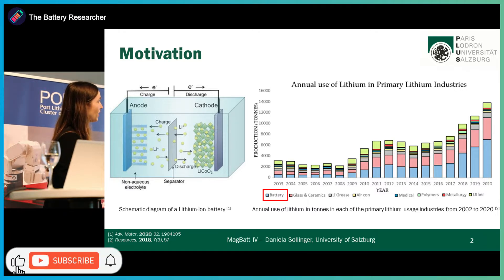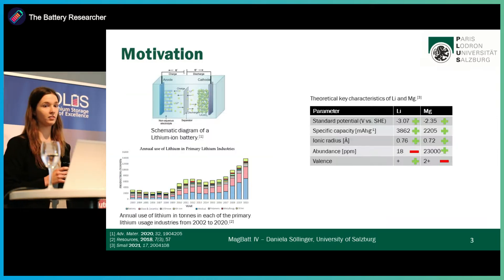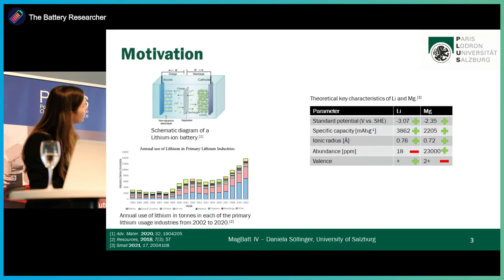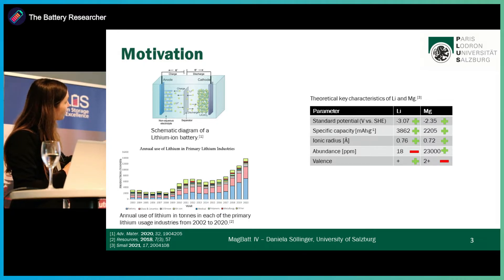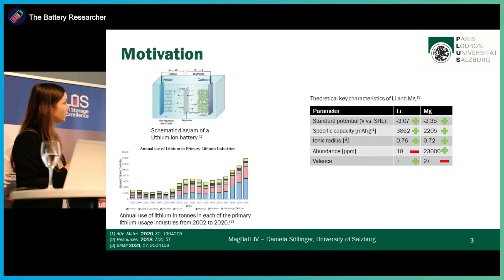Therefore, alternatives to partially replace lithium as a main part in batteries are of great importance. One of these potential materials is magnesium. Similar to lithium, magnesium exhibits a low standard potential versus the standard hydrogen electrode, has a high specific capacity, and a low ionic radius. A further advantage of magnesium compared to lithium is its higher abundance in the Earth's crust and thus the easy access to it worldwide.